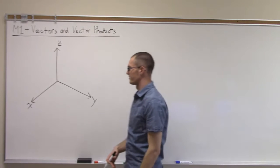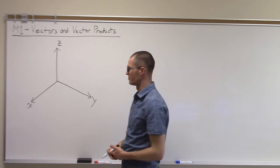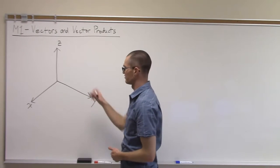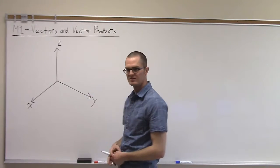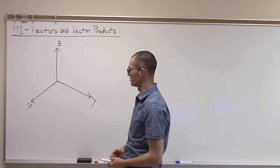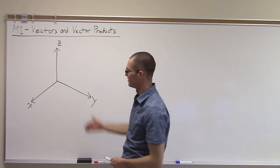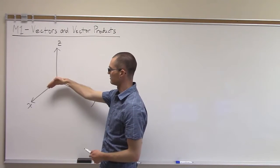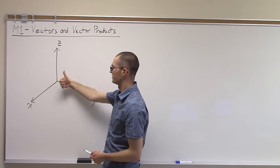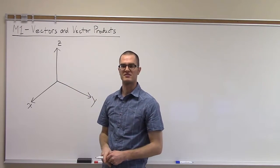Here we have a basic Cartesian coordinate system. It has three axis directions: x, y, and z. We say it's a right-handed coordinate system because if you take your right hand and put your fingers down the x-axis and curl them towards the y-axis, your thumb points in the direction of the z-axis.